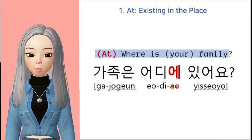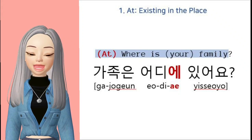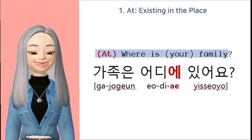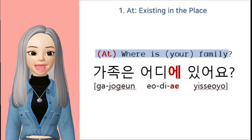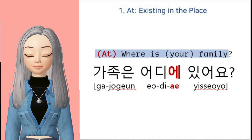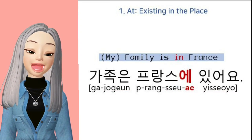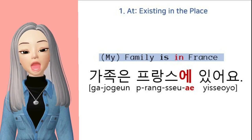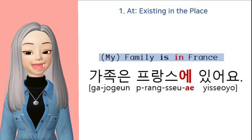Let's practice with a few more examples. For the question 'Where is your family?', you would say 가족은 어디에 있어요? Literally, in Korean, the translation is 'at where is your family?' So here, 에 sticks behind the word 'where' — 어디에. The answer to this question would be 'My family is in France.' In Korean, you say 가족은 프랑스에 있어요.